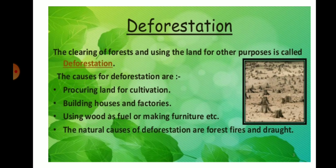Deforestation can be caused by agriculture, expansion of land for livestock, and for making houses and factories. Wood is used as fuel and for furniture. Wood pulp is used for making paper. The natural causes of deforestation are forest fires and drought, but the rest of the causes are man-made.